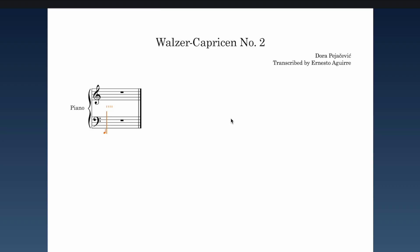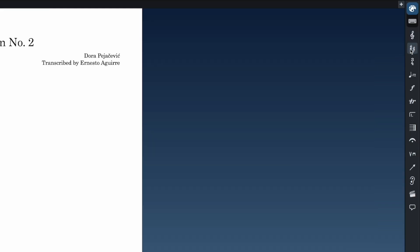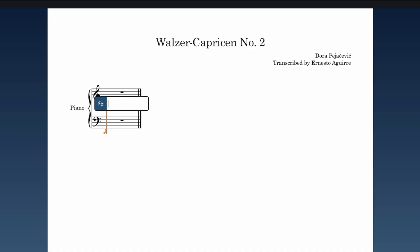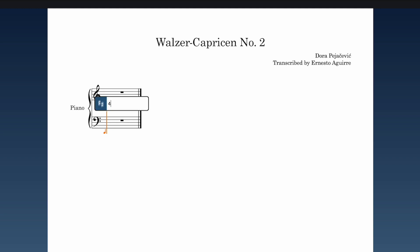For key signature I'll hit Shift+K. A little box appears with the key signatures icon. In here I can input things like a lowercase 'b' for flat — hit enter — and suddenly I have four flats. Or I can input a lowercase 'f' for F minor, which also adds four flats. Or I can do '4f' for four flats. That'll insert the same thing.